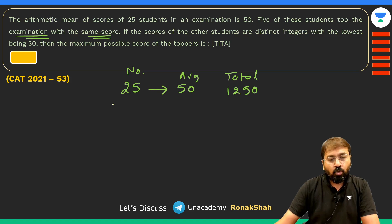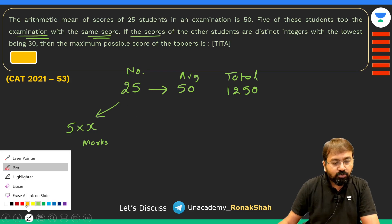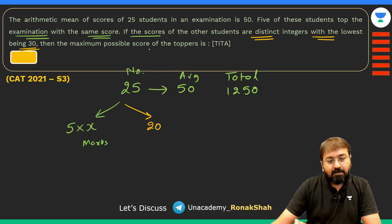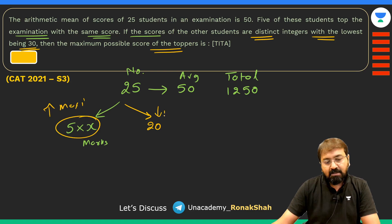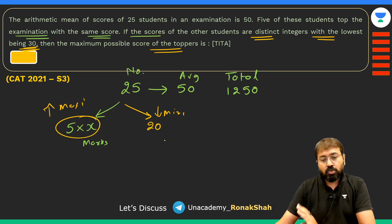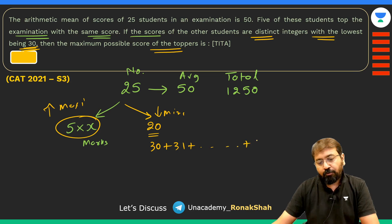The remaining 20 students have distinct integer scores with the lowest value being 30. To maximize the toppers' score, we must minimize the scores of these 20 students. Since their scores are distinct integers starting from 30, the minimum possible scores are 30, 31, 32, … up to 49.